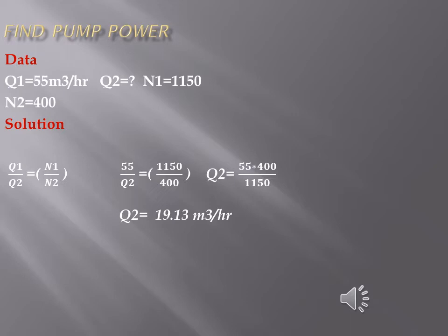q1 is given, n1 is given, n2 is given. The formula is q1/q2 = n1/n2. We have n1, n2, and q1, but we have to find q2. Put all the values into this formula and we will get the answer: 19.13 meter cube per hour.